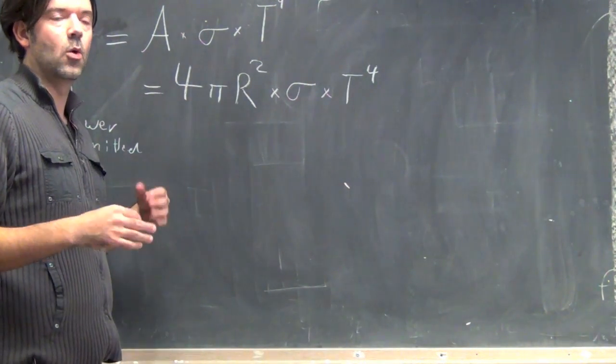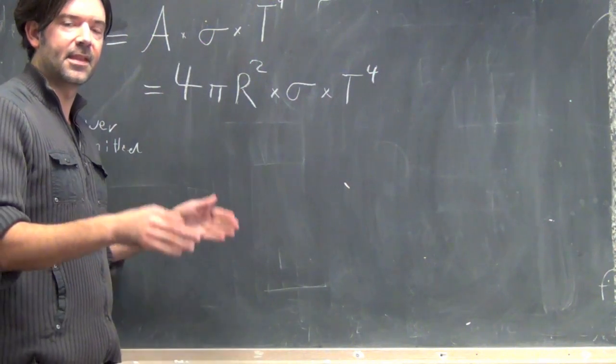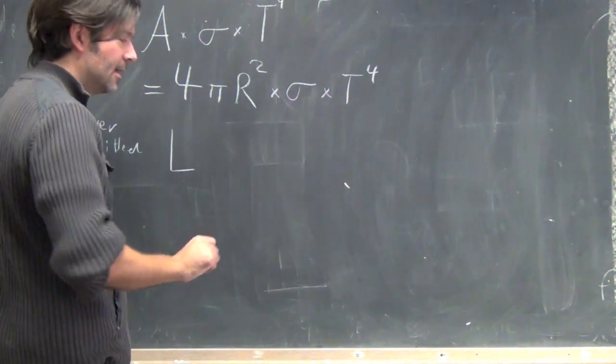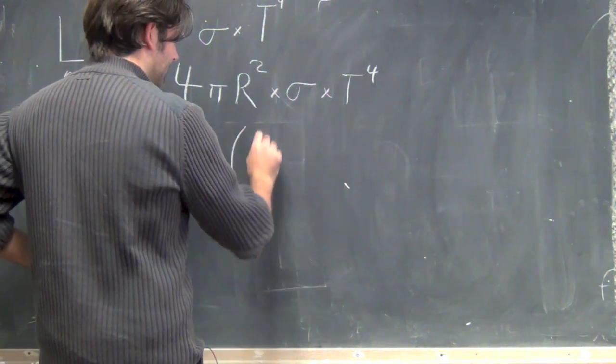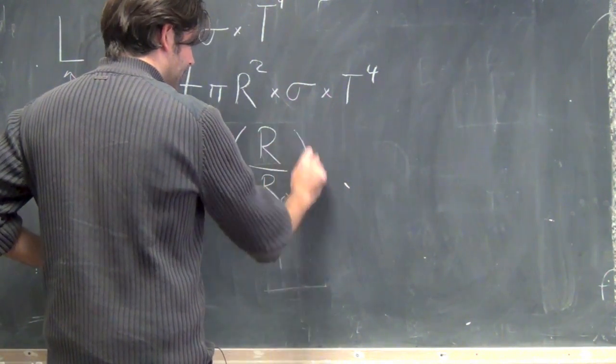But, we know that this holds true basically for the sun, so there's an easier way to write this formula that then you can use. So, it's like this, and that is that the luminosity is equal to the radius divided by the radius of the sun, squared,